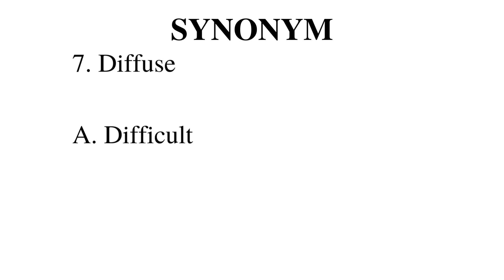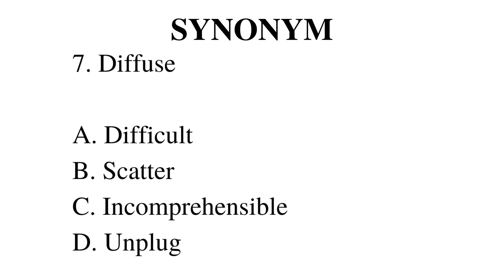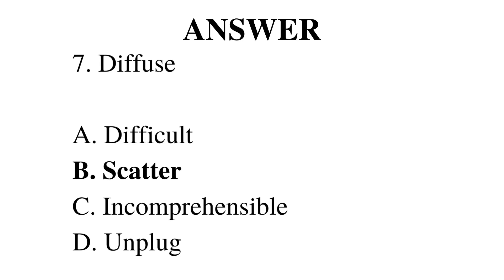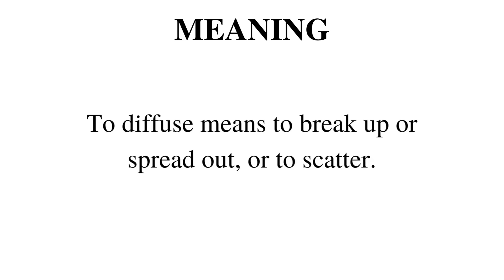Number 7. Diffuse. Is it A difficult, B scatter, C incomprehensible or D unplug? The correct answer is B scatter. To diffuse means to break up or spread out or to scatter.